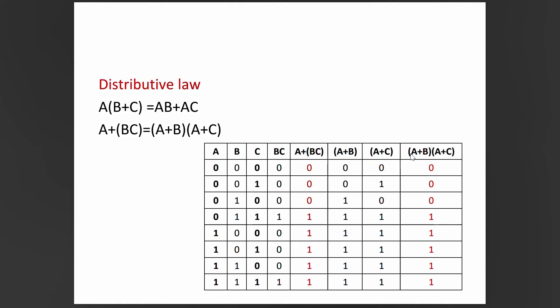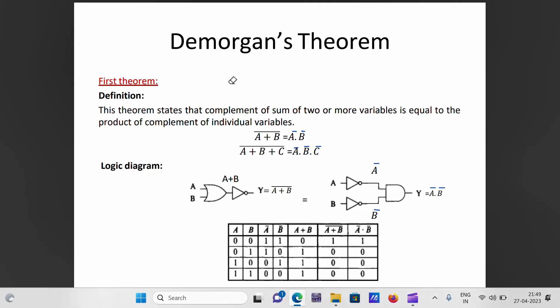De Morgan's first theorem states that the complement of the sum of two or more variables is equal to the product of the complements of the individual variables: (A+B)-bar = A-bar·B-bar. For three variables: (A+B+C)-bar = A-bar·B-bar·C-bar. The plus sign is replaced by a dot in the complement form.